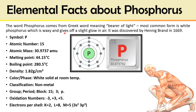Elemental Facts About Phosphorus: Phosphorus comes from the Greek word meaning 'bearer of light,' as the most common form is white phosphorus which is waxy and gives off a slight glow in the air. It was discovered by Hennig Brand in 1669. It is symbolized as P, atomic number 15, atomic mass around 31, melting point 44.15°C, boiling point 280.5°C. It is denser than water, having density 1.82 g/cm³, is a white solid at room temperature, and is a non-metal.